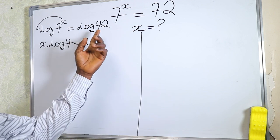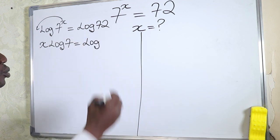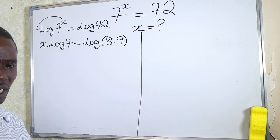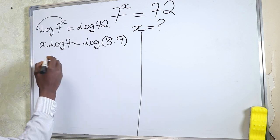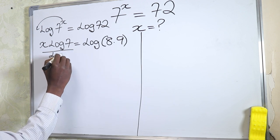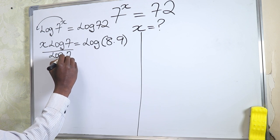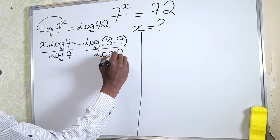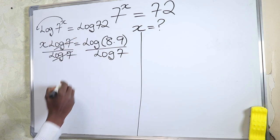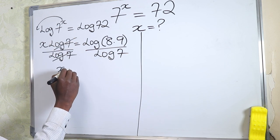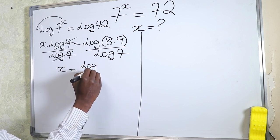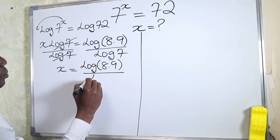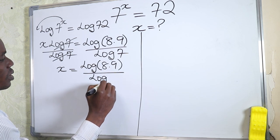We want to expand this because 72 can simply give us 8 multiplied by 9. So x·log 7 equals log(8×9). We can simplify the value of x by dividing both sides by log 7. Log 7 cancels out log 7, giving us x equals log(8×9) divided by log 7.